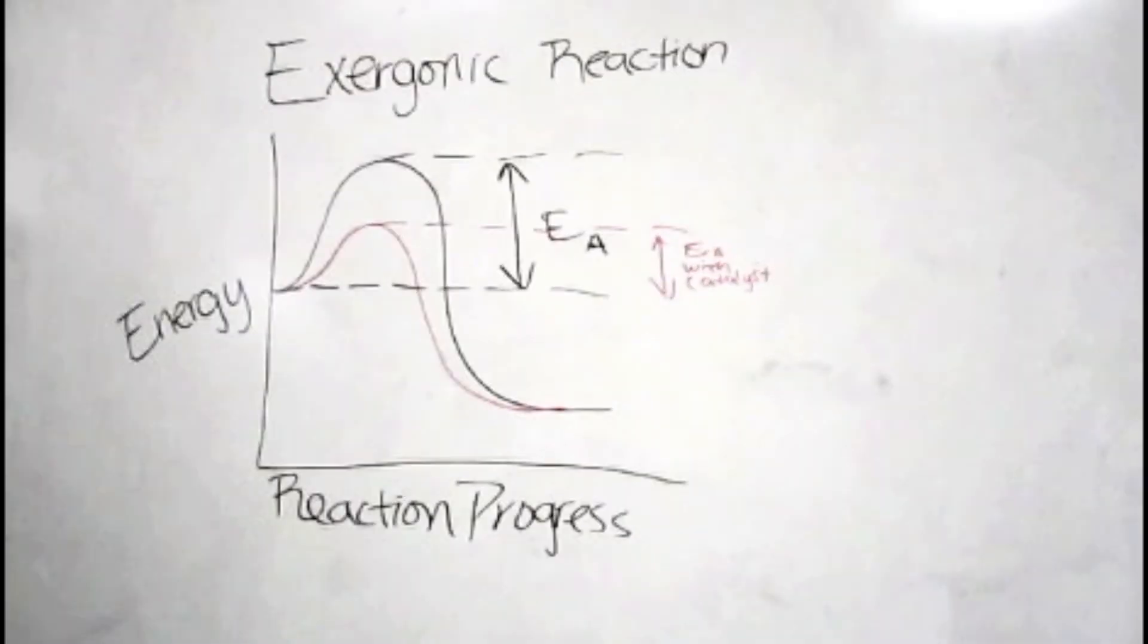If we go back to our steep hill example, we can think of catalysts as having the ability to make the hill less steep. Because the hill is less steep, it is much easier to climb over, which can be comparable to a catalyst lowering the energy of activation and allowing a reaction to proceed.